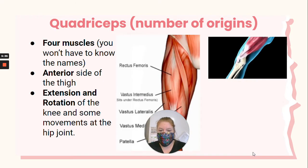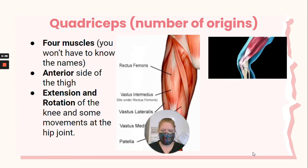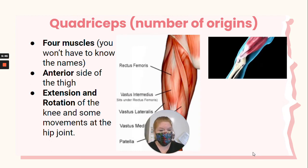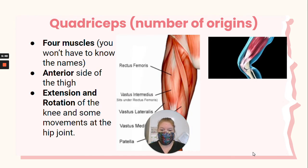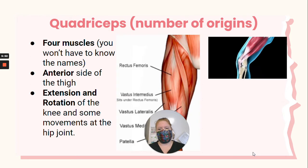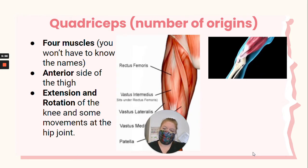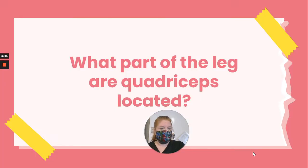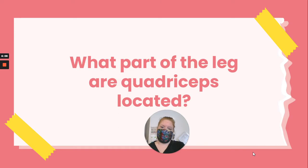And we have the quadriceps, also named for the number of origins. Quad means four — there are actually four muscles that are part of this big muscle group, but you don't have to remember the names of each individual muscle. The quadriceps are located on the anterior side of your thigh and are responsible for extension, rotation of the knee, and also a bunch of movements at the hip joint.